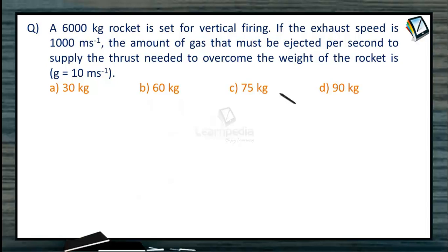Question: A 6000 kg rocket is set for vertical firing. If the exhaust speed is 1000 meters per second, the amount of gas that must be ejected per second to supply the thrust needed to overcome the weight of the rocket is: